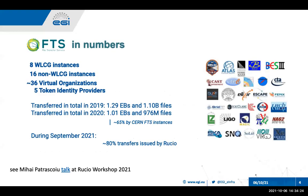Some numbers: the FTS use case started with WLCG, but there are many non-WLCG instances, including EGI, which are deployed worldwide. The numbers from 2019 to 2020 show that it went over the exabyte scale, with close to or over billions of file transfers over the years. It was also shown that in September 2021, 80% of the transfers were issued by Ruscio — so Ruscio is basically the main client for FTS, and all the different communities which are using FTS now in production are represented.